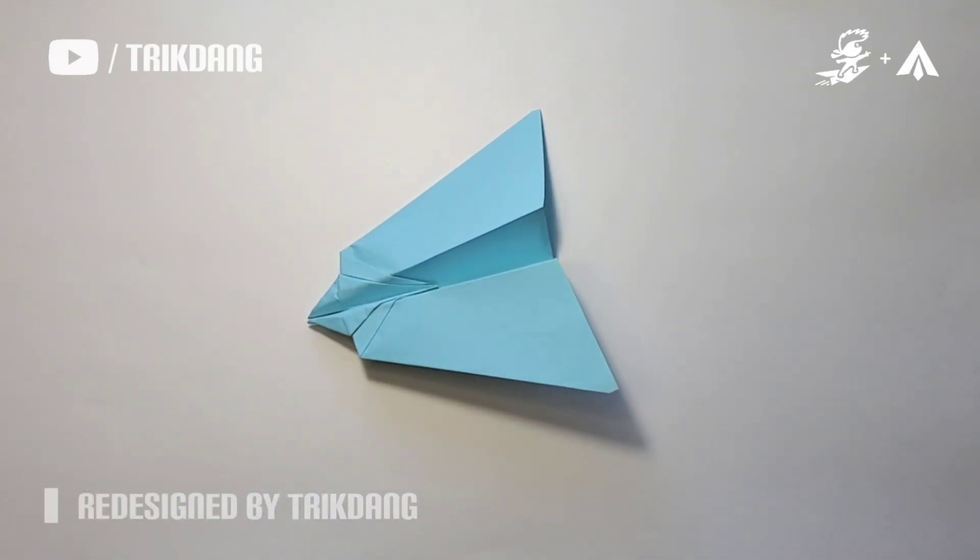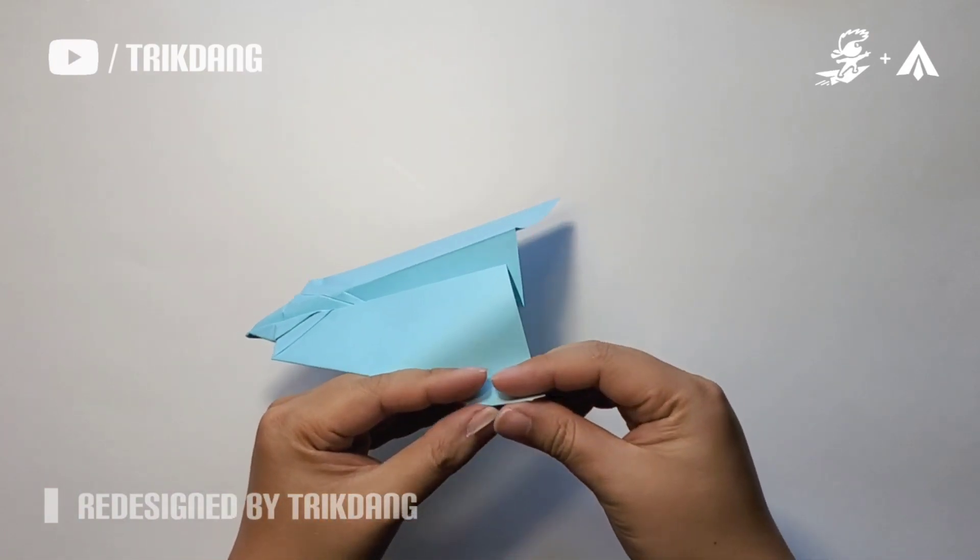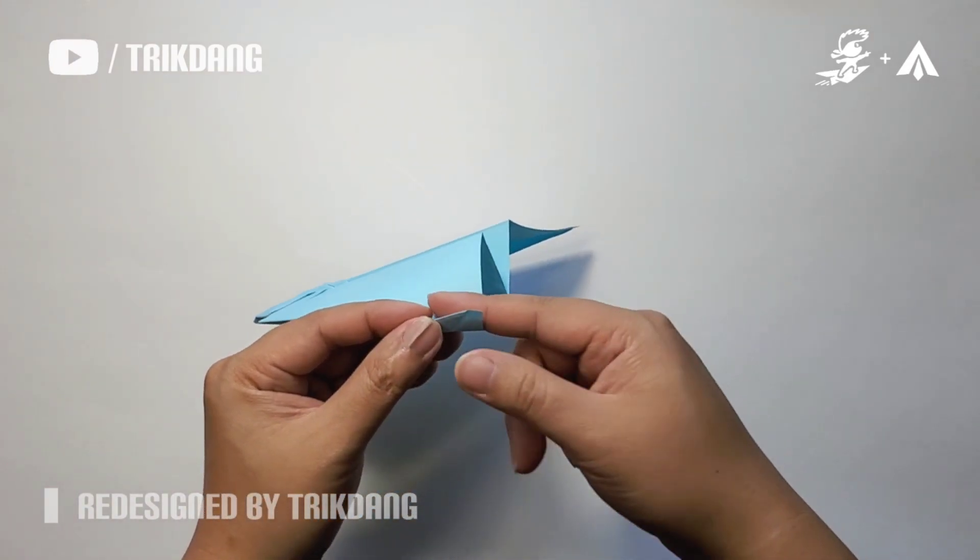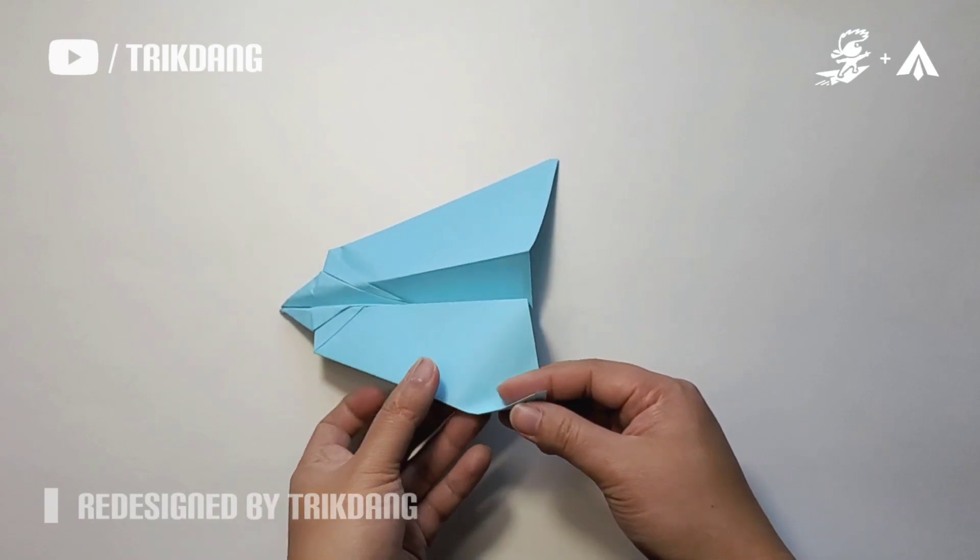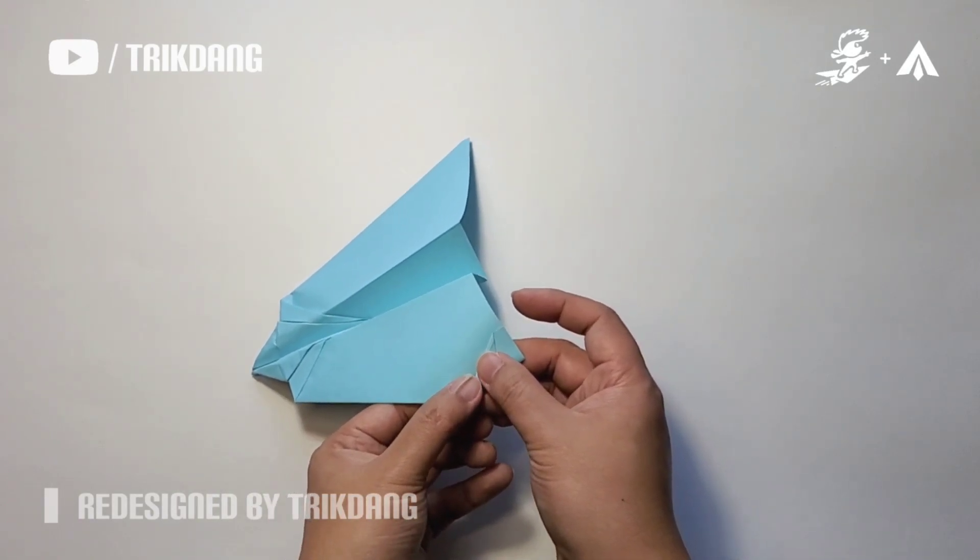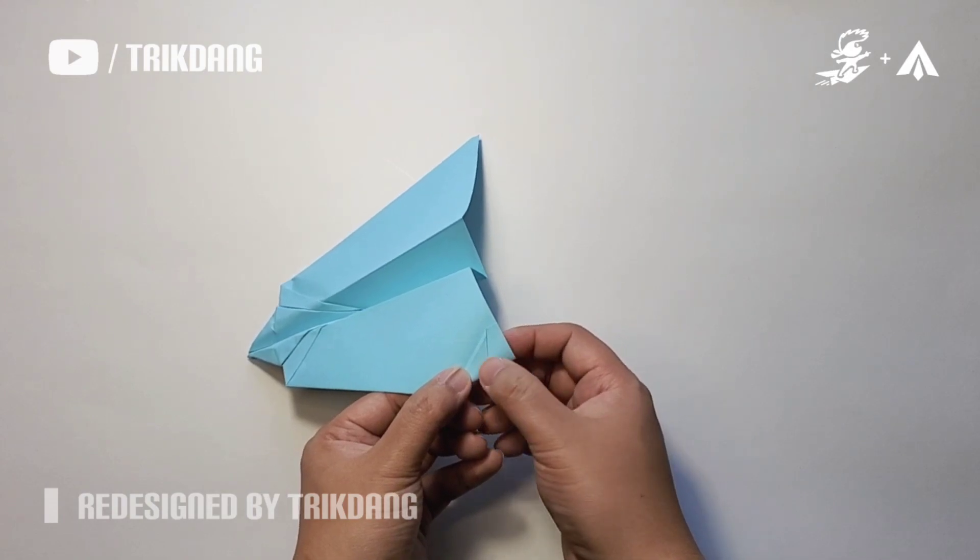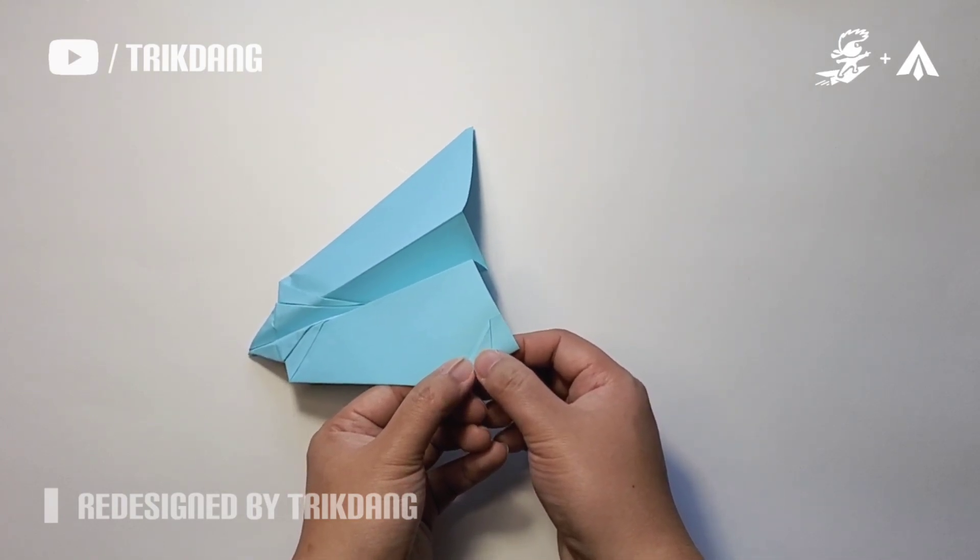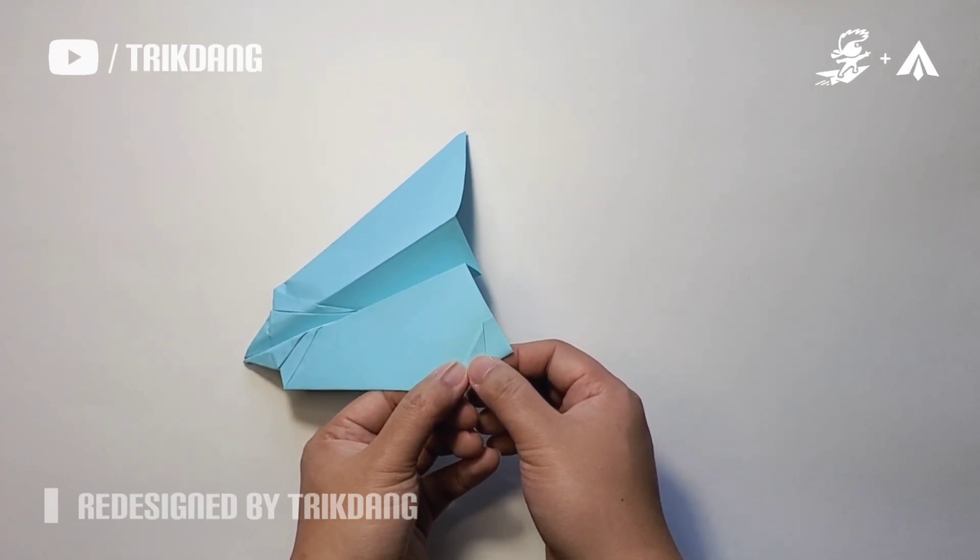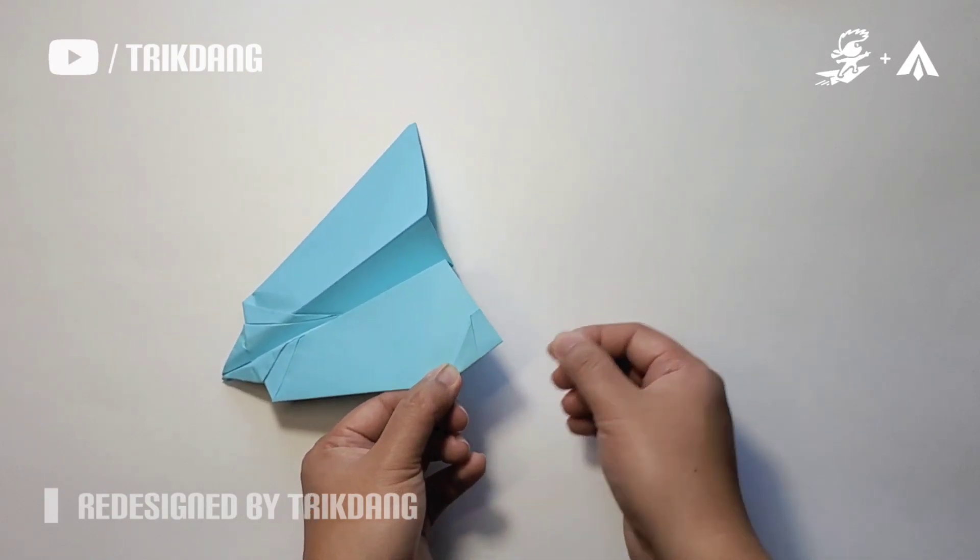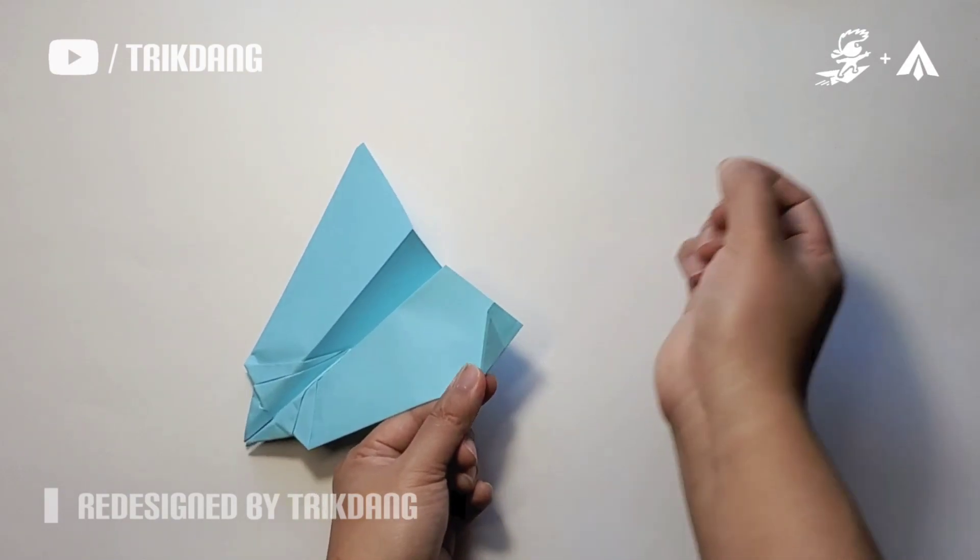But before you fly it, let's create the stabilizers. Without the stabilizers, this plane will not fly very well. Let's hold the paper airplane right here. You may just use your finger as a reference to fold, but if you want, you can measure. It's about one and a half centimeters or just like two-thirds of an inch to create the stabilizers. So I finished this one.